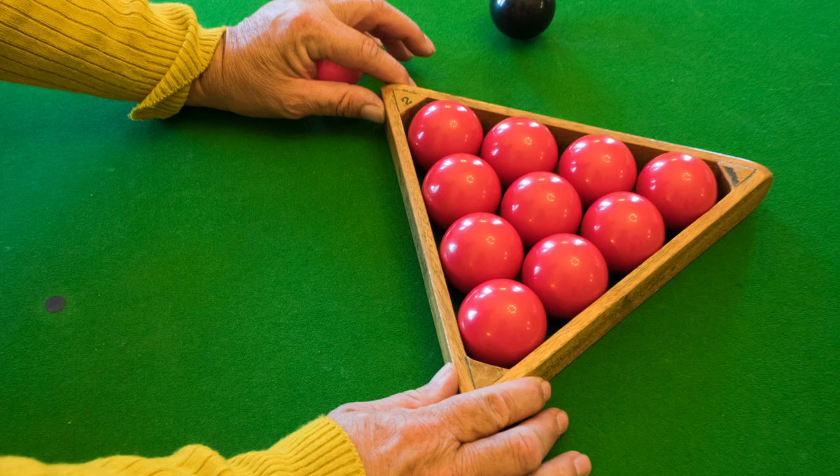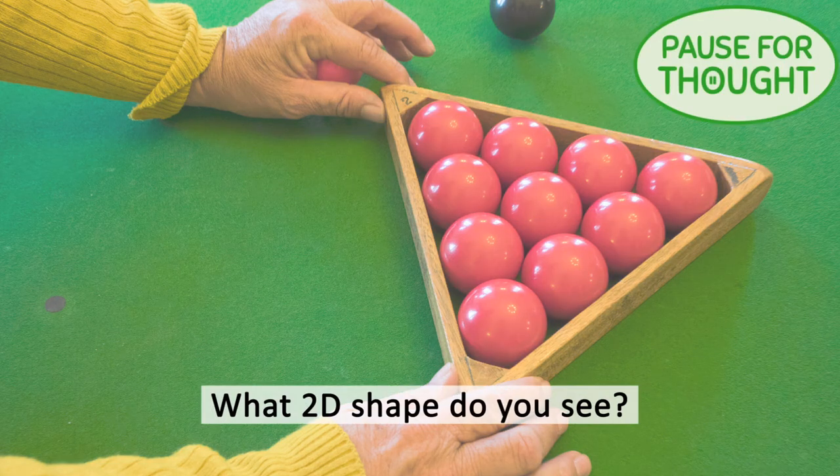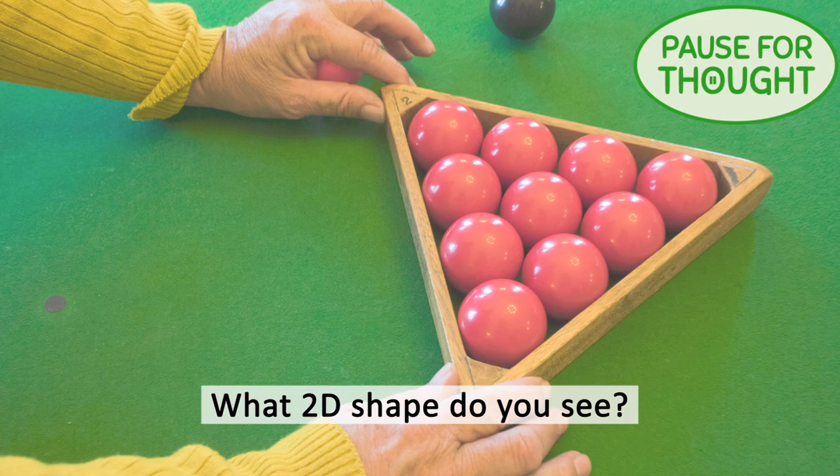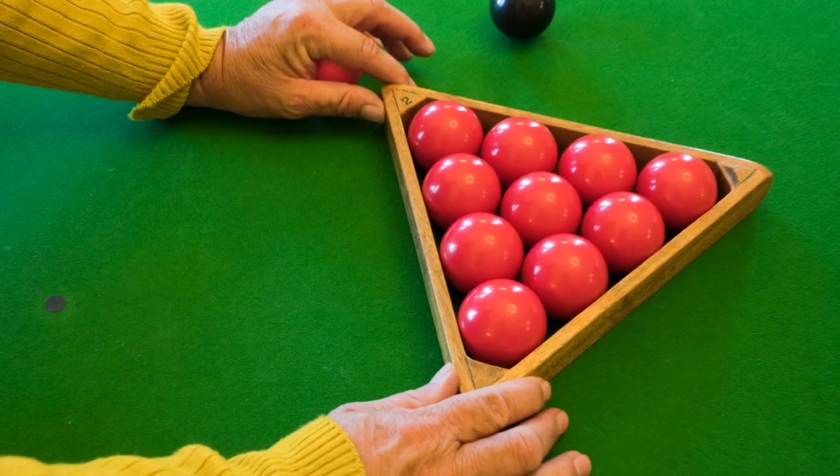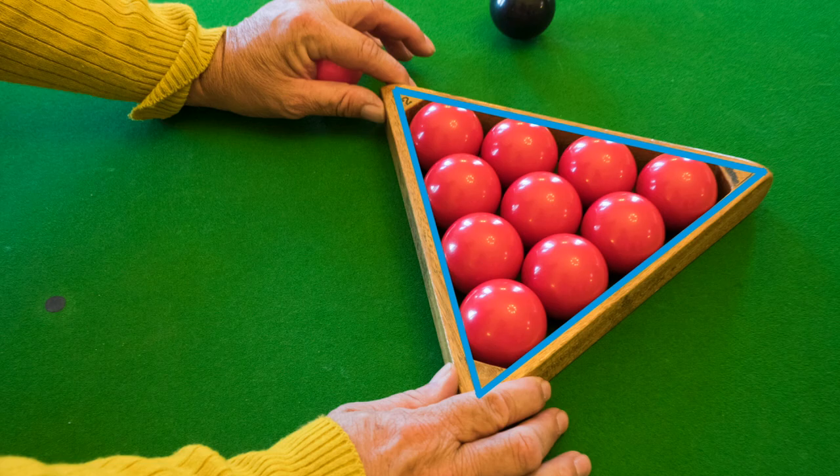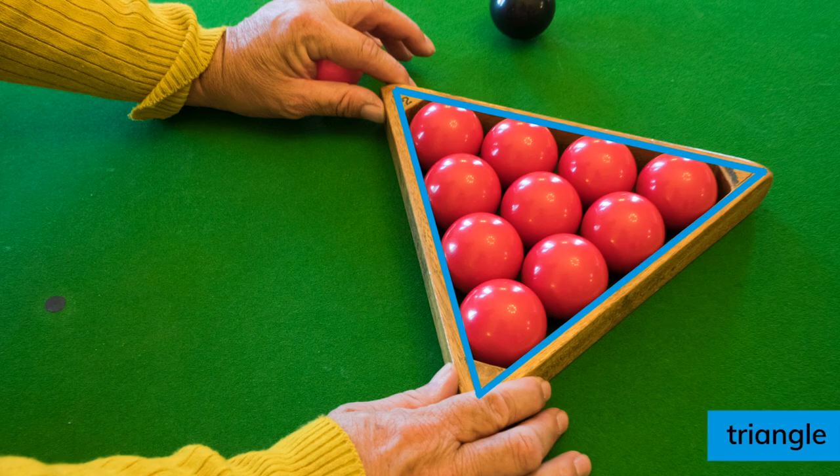These red snooker balls are set together inside a wooden shape. What 2D shape do you see? This shape has three straight sides. It must be a triangle!